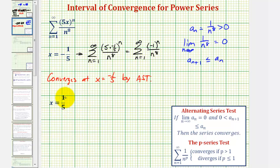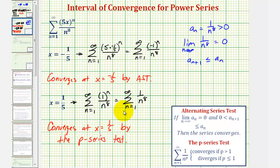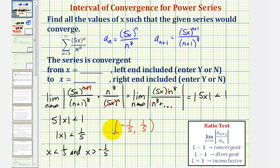Now let's see what happens at x equals one-fifth. The only difference is we'd have positive one-fifth, giving us one to the nth divided by n to the eighth. Since one to the nth is just one, we have one divided by n to the eighth, which converges by the p-series test with p equals eight. So the series also converges at the endpoint x equals positive one-fifth by the p-series test. This means the interval of convergence is not the open interval, but the closed interval from negative one-fifth to positive one-fifth.